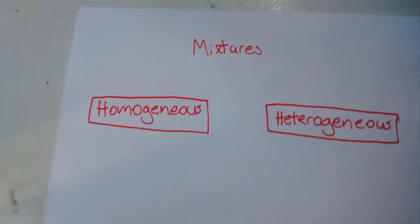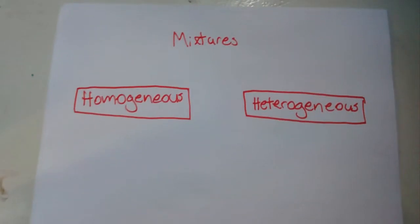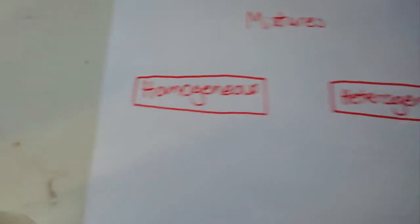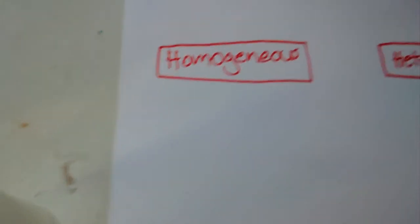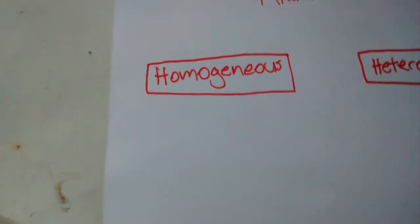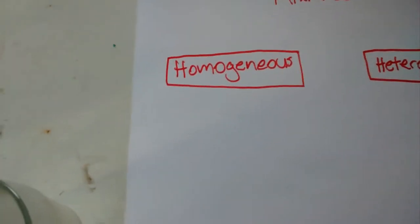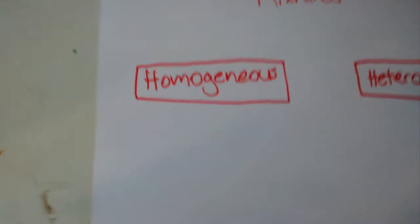Moving on, we go to mixtures. Now, there are two different types of mixtures. Homogeneous and heterogeneous. A homogeneous mixture is when you take two or more molecule things and put them together to form something that you can't distinguish the difference between.